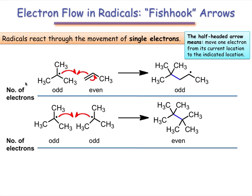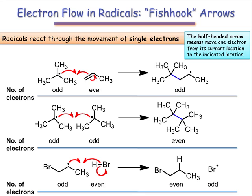In the second example, two radicals combine with one another to produce an even electron species. And finally, in the last example, a radical reacts with the single bond of HBr producing an even electron product and a separate bromine radical.